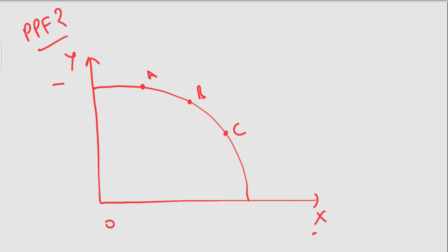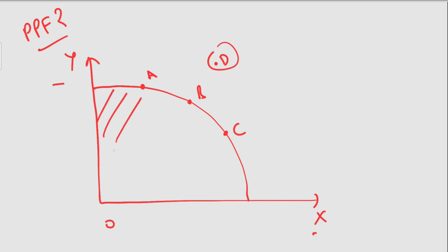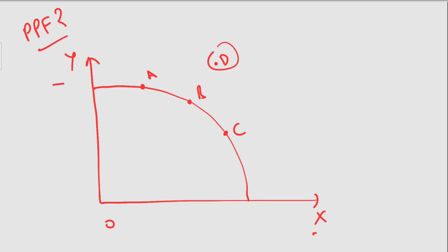Now, suppose there is a point D outside this curve. This suggests a combination of goods that cannot be produced. This point cannot be achieved because there are not enough resources in the economy to produce at point D — resources are scarce. A country can only produce within this curve, and these are the feasible points.